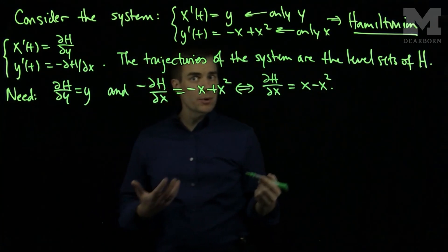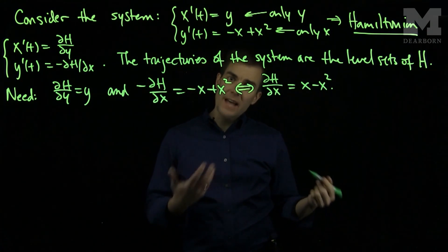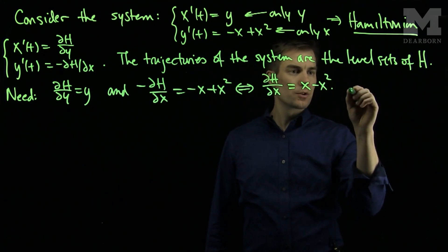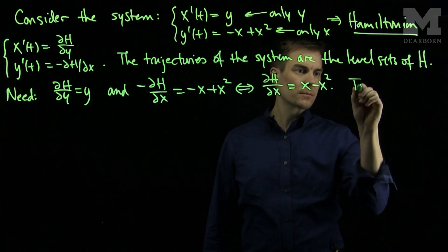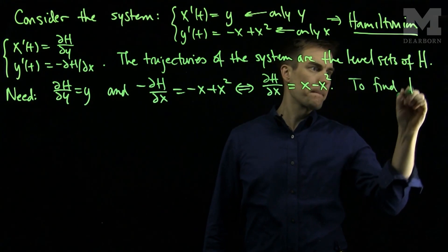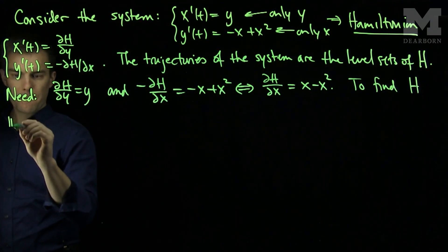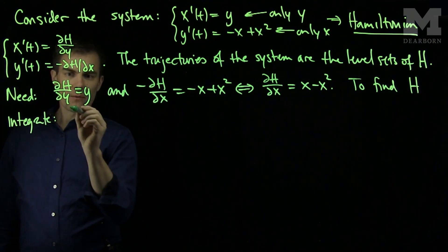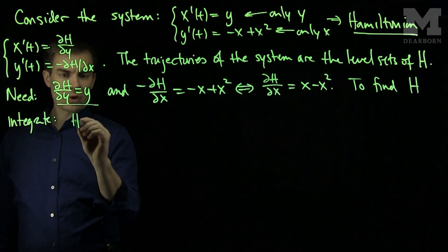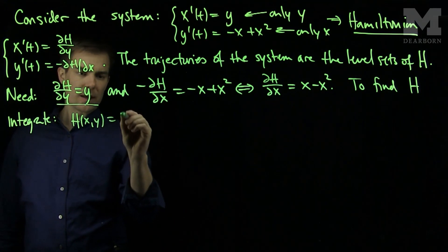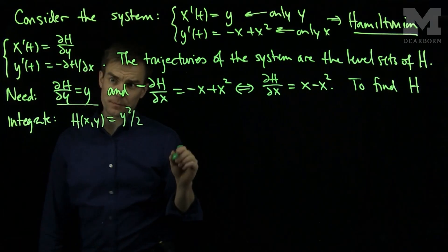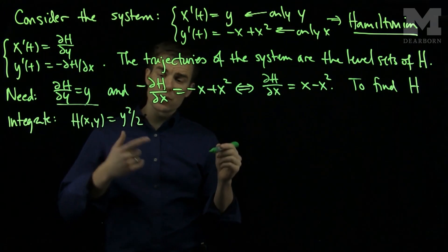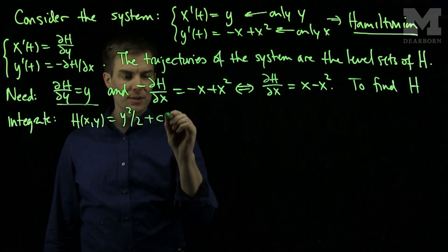Now we follow the same procedure that we use for exact equations except with the derivative rules reversed. So we integrate and differentiate. To find H, we integrate this equation with respect to y. If we integrate this equation with respect to y, we will have H(x,y) = y²/2 plus a constant. Since we're integrating partially with respect to y, the constant will be a function of x plus c(x).